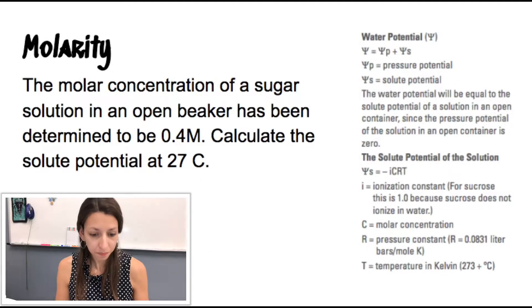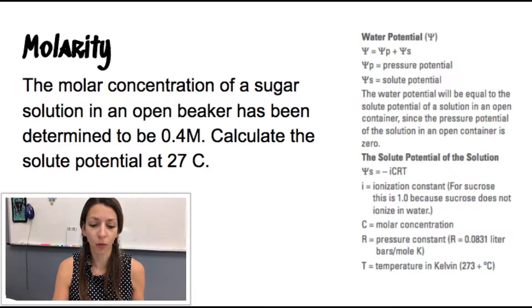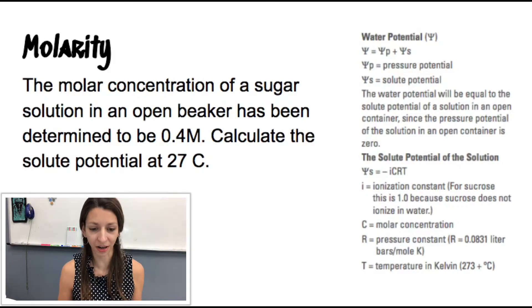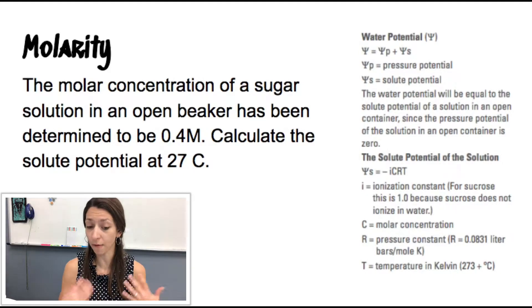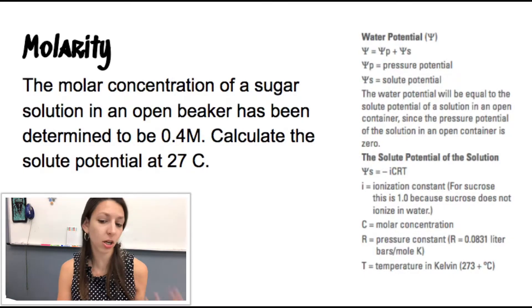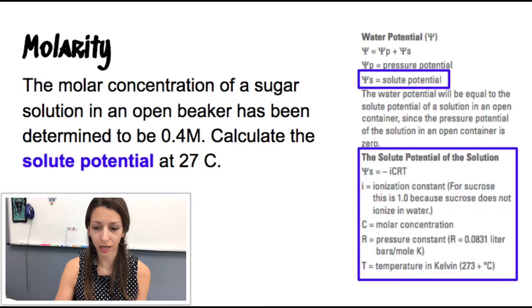So let's do a molarity problem. Let's see what we can do with this and our formula sheet. So the molarity, the molar concentration of a sugar solution in an open beaker has been determined to be 0.4 molar. Calculate the solute potential at 27 degrees Celsius. So let's look at what we need to find. The solute potential.